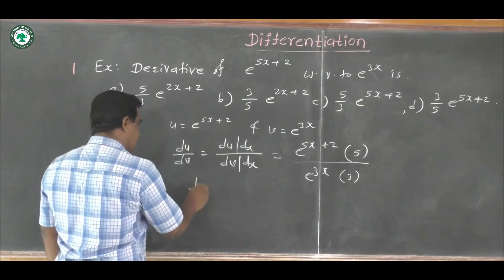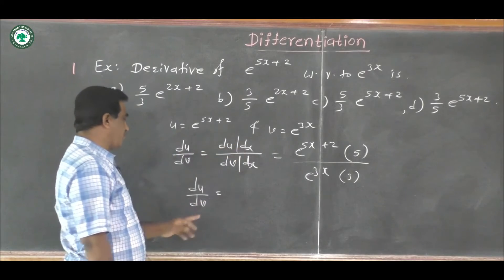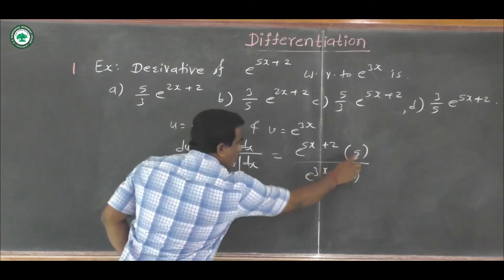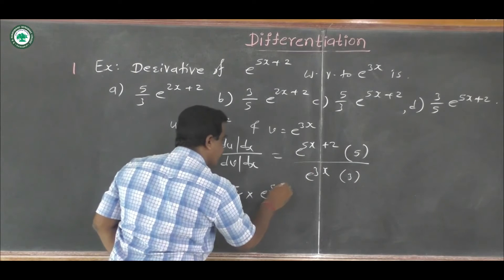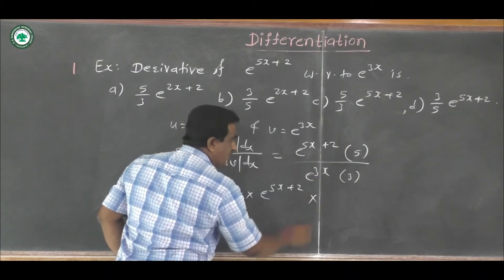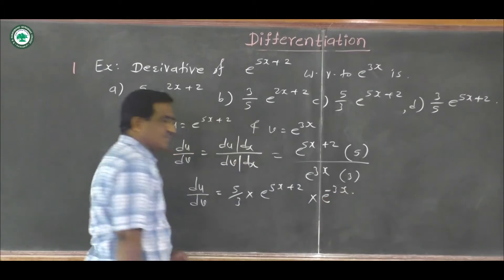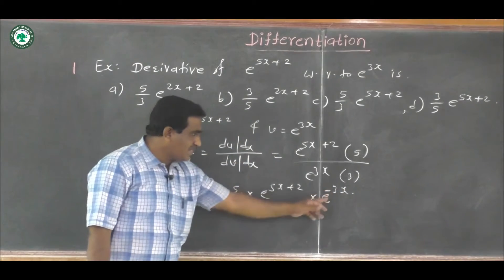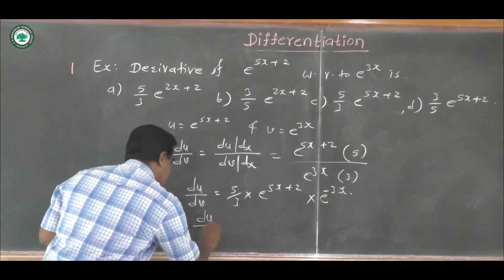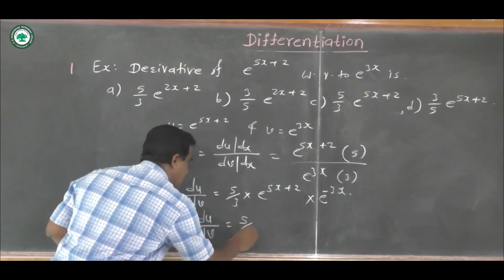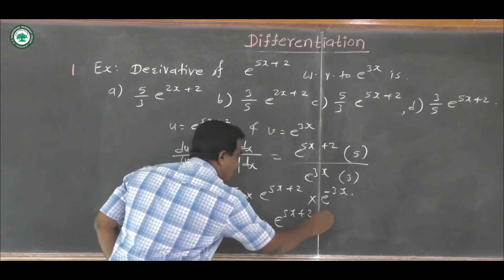Therefore, du by dv equals (du by dx) upon (dv by dx) equals (5 e raised to 5x plus 2) upon (3 e raised to 3x). This gives us (5 by 3) into e raised to (5x plus 2) into e raised to minus 3x. Since the base is e, we add the indices: du by dv equals (5 by 3) into e raised to (5x plus 2 minus 3x).